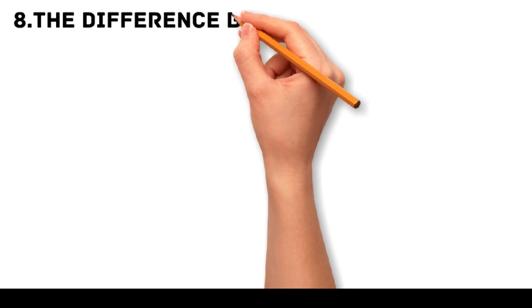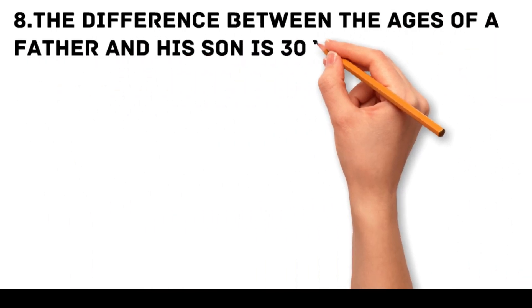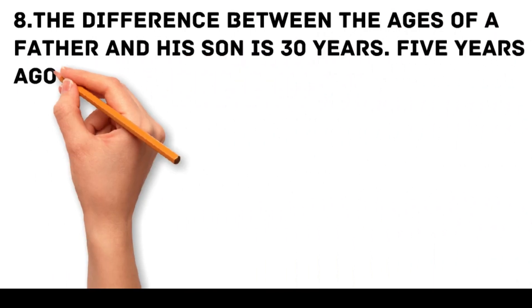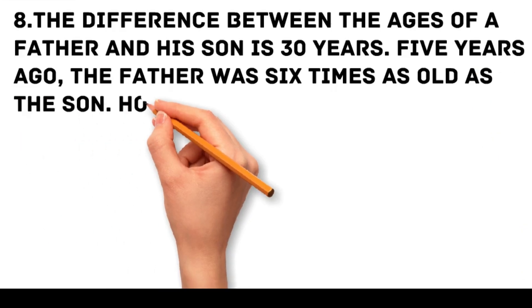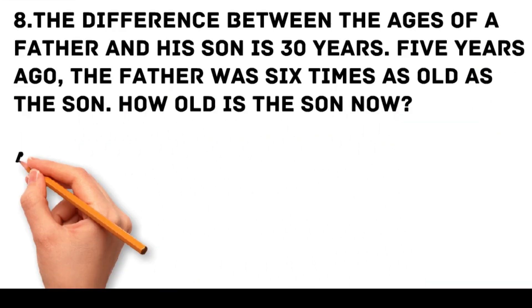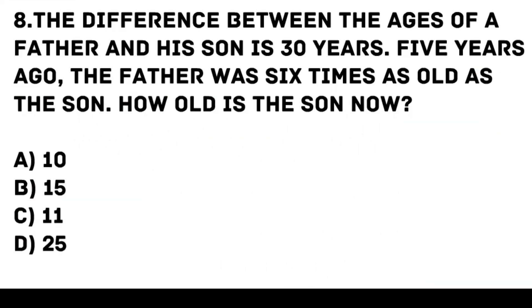Problem 8. The difference between the ages of a father and his son is 30 years. Five years ago, the father was 6 times as old as the son. How old is the son now? A. 10, B. 15, C. 11, D. 25.